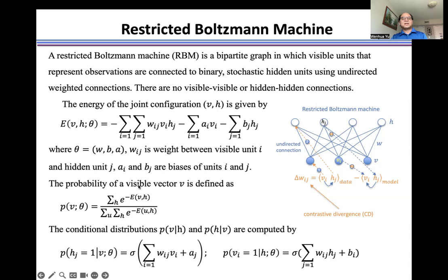The probability of visible vector v is defined as this formulation. The conditional distributions, probability of h given v and the probability of v given h, are computed using these two formulations.